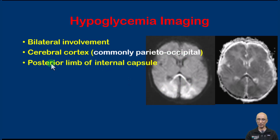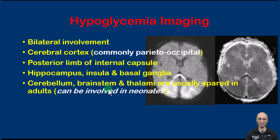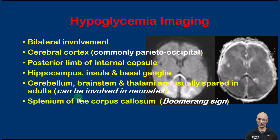There can also be involvement of the posterior limb of the internal capsule, although this feature was not identified in our patient. There can also be involvement of the hippocampus, insula, and basal ganglia. There can also be involvement of the cerebellum, brainstem, and thalamus in neonates — whereas this is classically spared in adults — and as we saw in our patient, there can be involvement of the splenium of the corpus callosum, giving the classic boomerang sign.